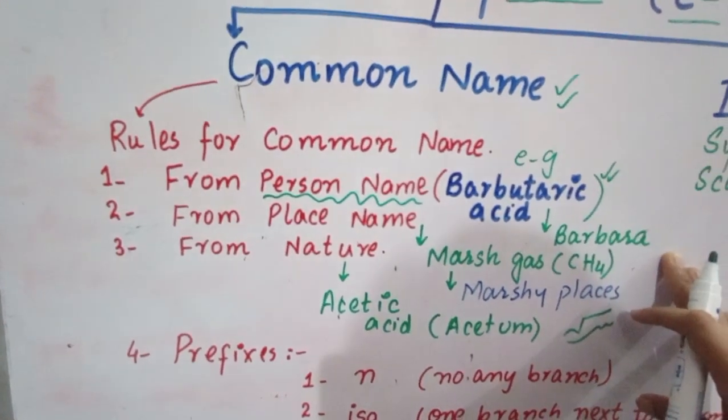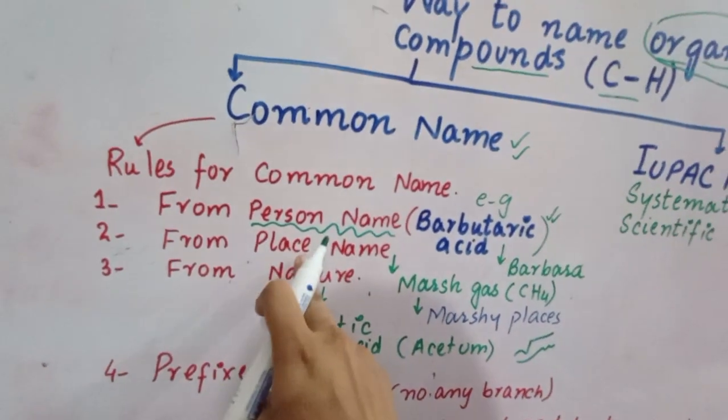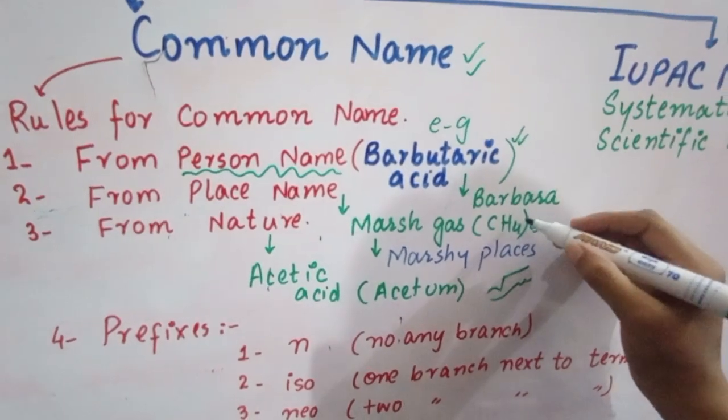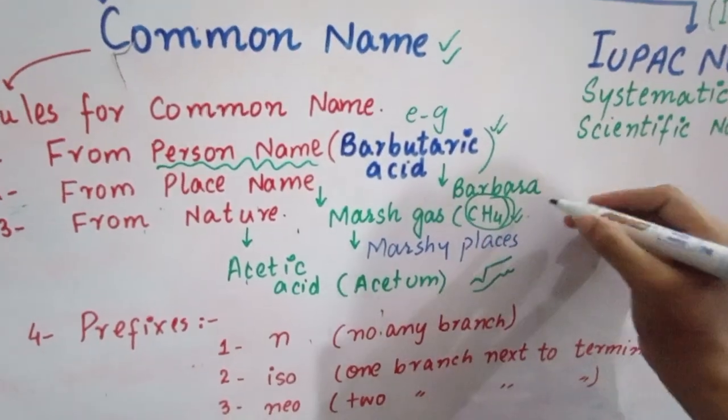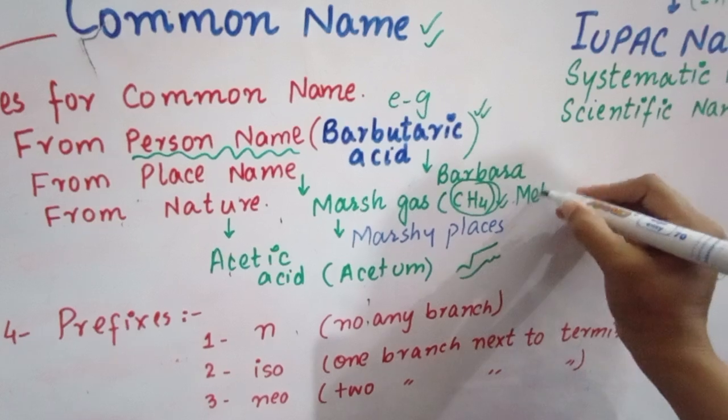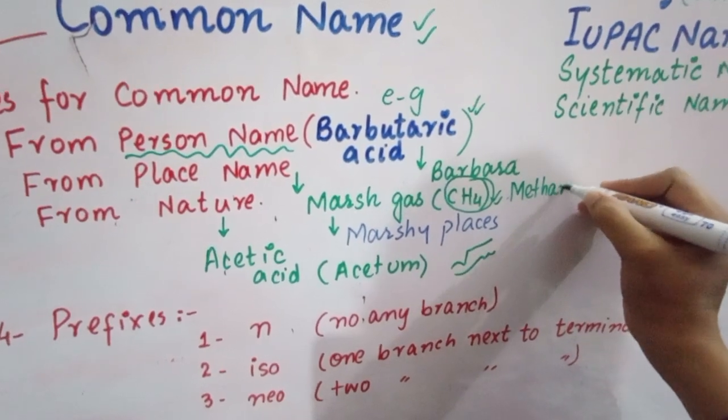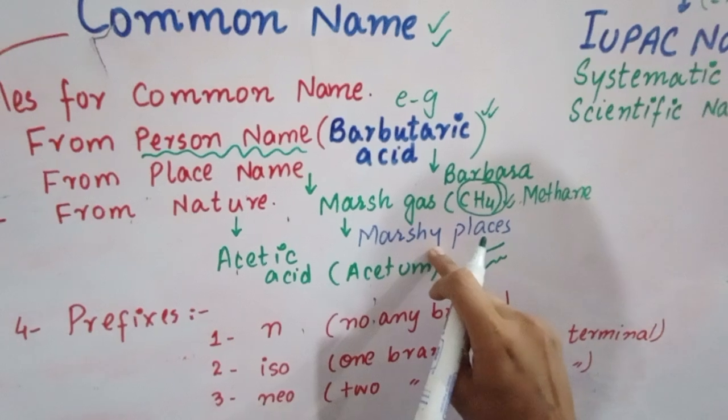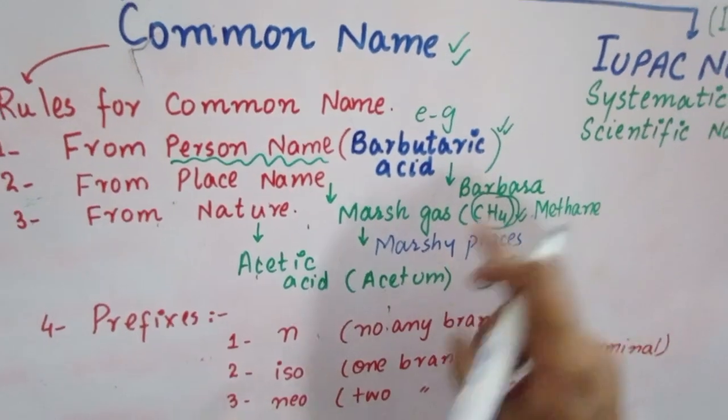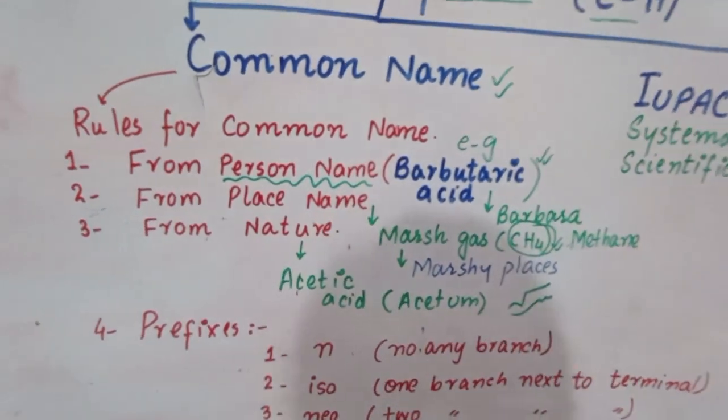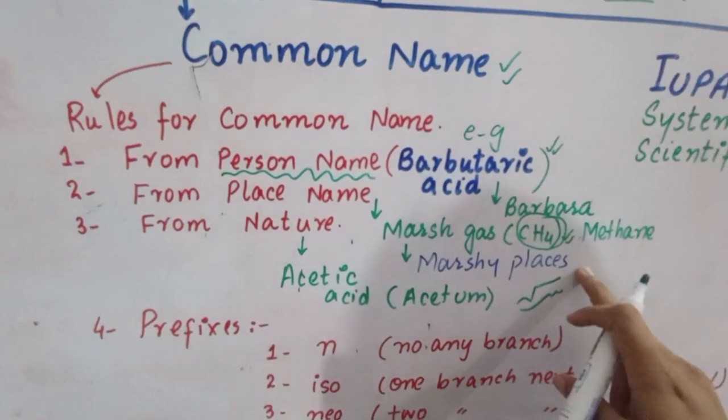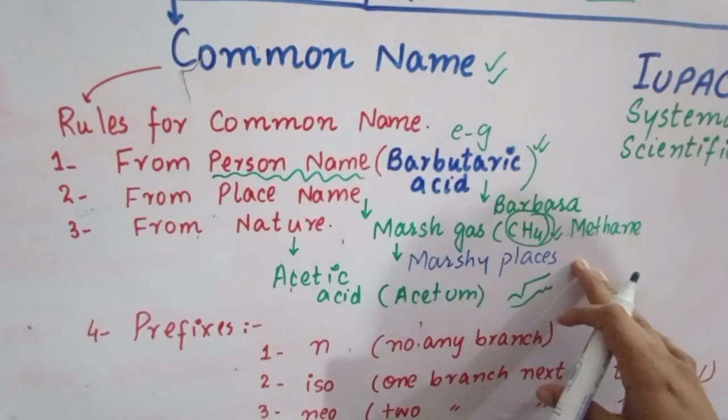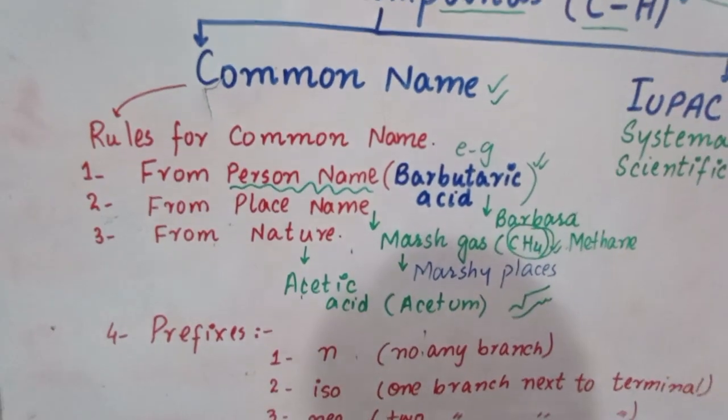Secondly, the common names come from the place where they are discovered. Like marsh gas - you all know marsh gas, the second name is methane. And this gas was discovered in marshy places. The place where marsh gas was discovered - according to that place, we named it marsh gas from marshy places.